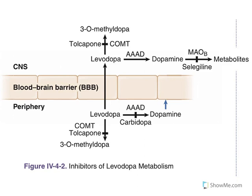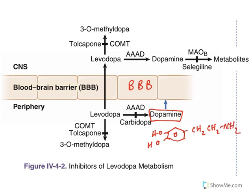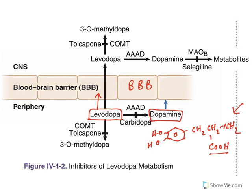Before getting into that, understand this. The blood-brain barrier is made up of a tough blood vessel network which will not allow all molecules into the brain — only certain molecules are allowed. So dopamine cannot cross the blood-brain barrier, and you cannot directly use dopamine to treat Parkinson's disease. The reason is that dopamine is an amine molecule, and the amine can acquire a charge; a charged molecule cannot cross the blood-brain barrier.